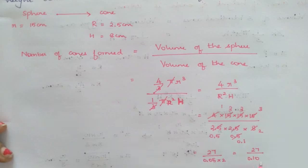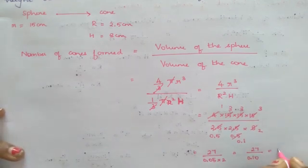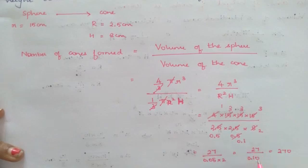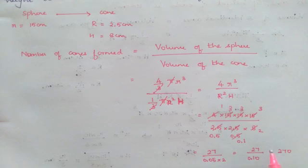So now this is 27 by 0.1, which is nothing but 270. Yes or no? 27 by 0.1 actually. So 0.1 into 10 by 27 into 10, that will be 270 by 1. So that's nothing but 270.